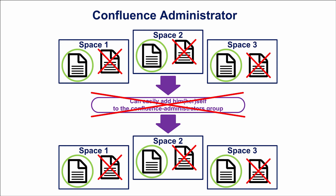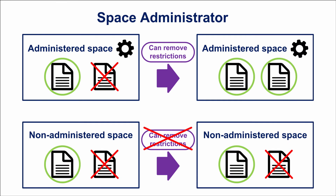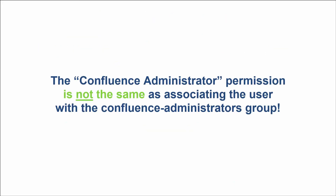So some spaces or pages can be hidden from Confluence Administrators. Space Administrator permissions define who can perform administrative functions within a specific space only. Space Administrators can remove restrictions and see the content of all pages within their space. Unless admin users are members of the Confluence Administrators group, they can't see a specific page restricted with page permissions. Note that granting the Confluence Administrator permission to a user or group is not the same as associating the user with the Confluence Administrators group – the similarity of these names can cause confusion.